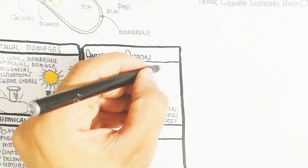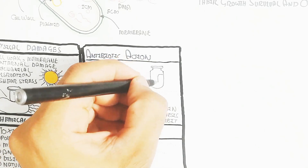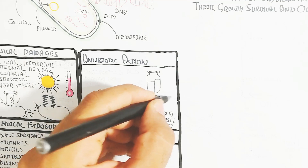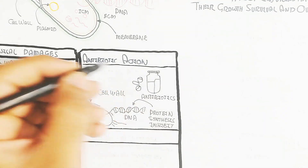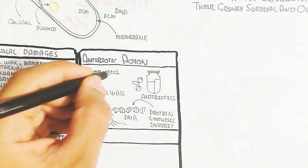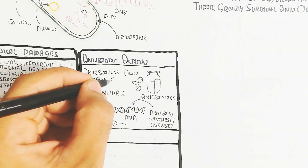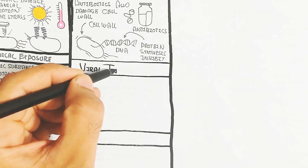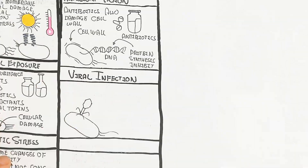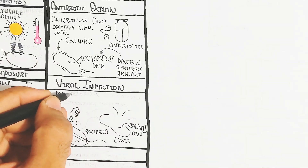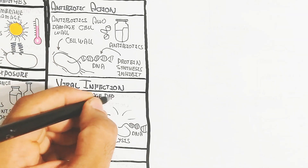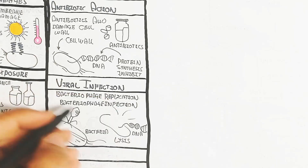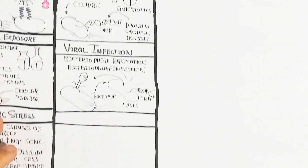Antibiotic action damages the cell wall — for example, penicillin, which is extracted from the fungus Penicillium. Antibiotics target the cell wall or inhibit protein synthesis, or cause DNA damage. Viral infection is also important: bacteriophage replication upon infection leads to bacterial cell lysis and production of more bacteriophage.